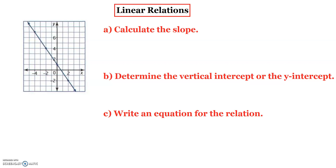Let's look at the first example. In part a, we have to calculate the slope. In part b, determine the vertical intercept or the y-intercept. Part c is to write an equation for the relation. In order to find the slope, we're going to look at the graph and pick any two points. Let's just write those points.